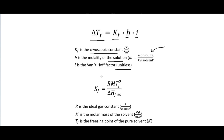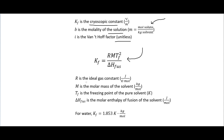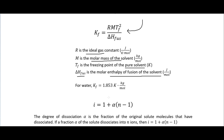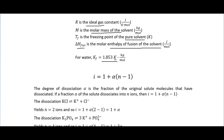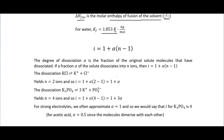The cryoscopic constant KF can be calculated using R (the ideal gas constant), M (the molar mass of the solvent), TF (the freezing point of the pure solvent), and ΔHfusion (the molar enthalpy of fusion of the solvent). For water, plugging in those values gives KF = 1.853 K·kg/mol.